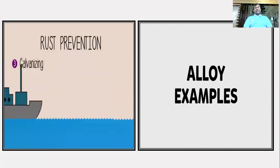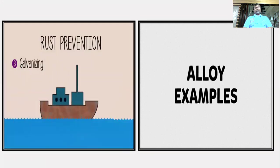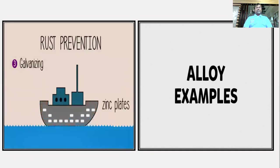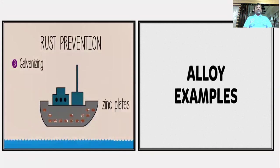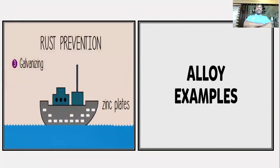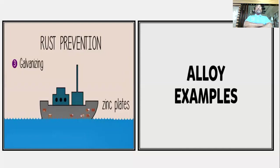Besides preventing rusting, there is another advantage to galvanizing. The zinc oxide layer that forms can be removed and the freshly exposed zinc can corrode once again, thereby further protecting the iron or steel hull.